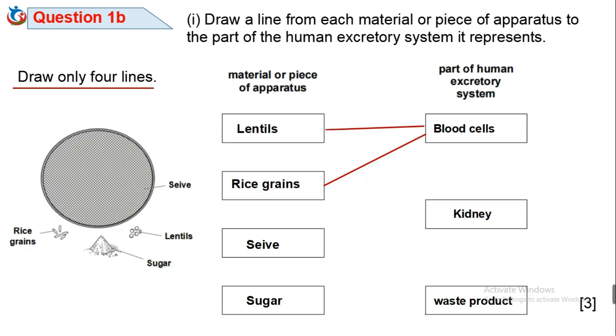And due to their size will not pass through the sieve. So lentils and rice grains represent the blood cells. The blood enters the kidney but blood cells don't pass through. The sieve represents the kidneys which filters the blood. And finally the sugar representing soluble waste that needs to be excreted.